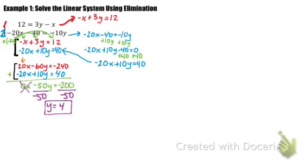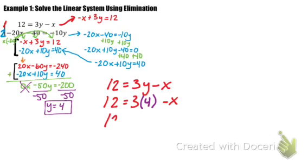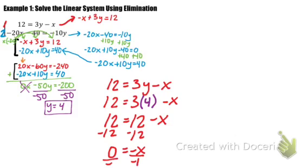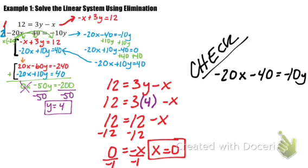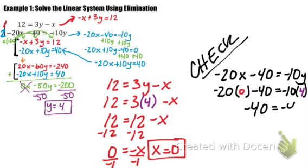So that's one of my variables. To get my other variable, you substitute that y into either equation. I'm selecting the first equation, 12 equals 3y minus x. Substitute in my y and solve for x. So my x is equal to 0. I'm going to check my answers always just so that I'm being more self-sufficient. I pick the second equation, negative 20x minus 40 equals negative 10y, and substituting my values, and it checks out. Make sure you write down questions, don't just copy down the equation and not really know what's going on.